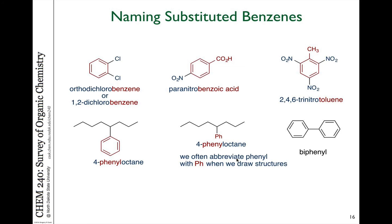Here are some additional examples of aromatic compounds and their names. If we have two chlorines on a benzene ring, we can call that dichlorobenzene. The 1-2 relationship can be given by numbers or using ortho, meta, and para — in this case the 1-2 position would be the ortho position. Keep in mind that ortho, meta, and para refer to two groups relative to each other, so if you have more than two substituents, you can't really use ortho, meta, and para in the name because it's unclear what's ortho or para or meta to what.